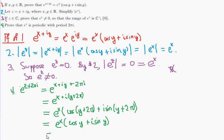And therefore, this is equal to e to the z, which is where we wanted to end up. So that proves number 4. These four properties of the exponential function are fairly closely related, so it was easiest to do them all at once in the same video.